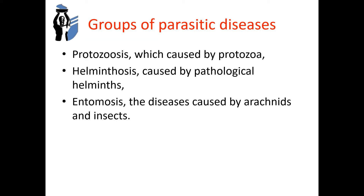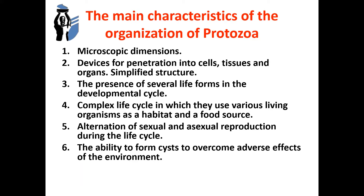The representatives of type protozoa are unicellular animals. In morphological terms, the protozoa organisms are cells, but in physiological terms, they are complete independent organisms. The main characteristics of the organization of protozoa are: microscopic dimensions; devices for penetration into cells, tissues and organs; simplified structure; the presence of several life forms in the developmental cycle; complex life cycle in which they use various living organisms as a habitat and food source; alternation of sexual and asexual reproduction during the life cycle; and the ability to form cysts.